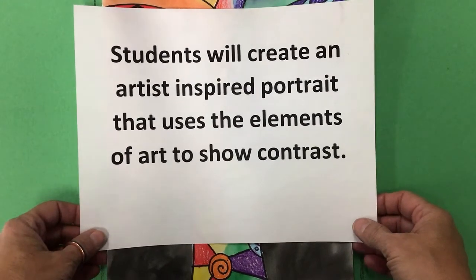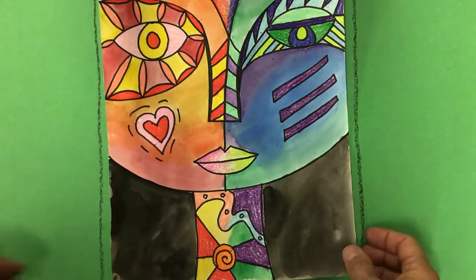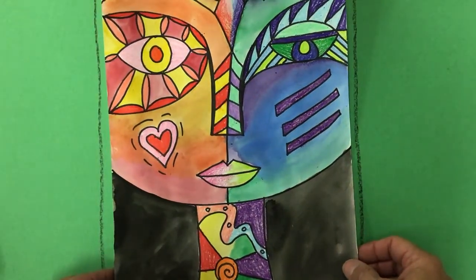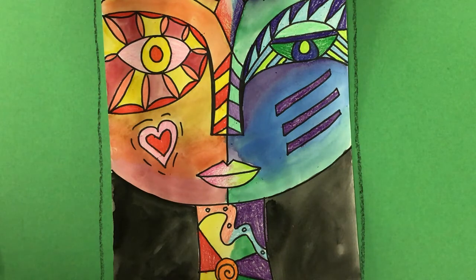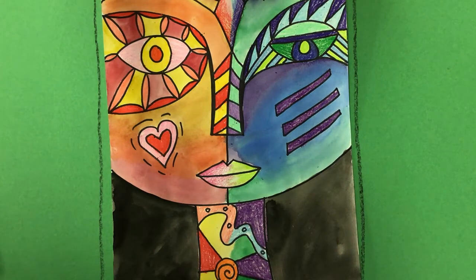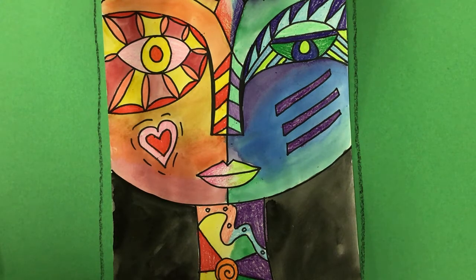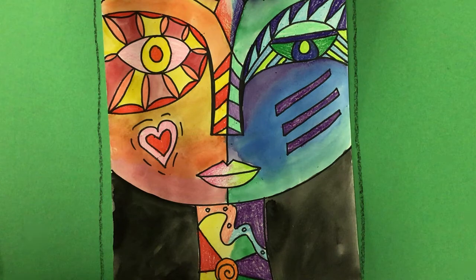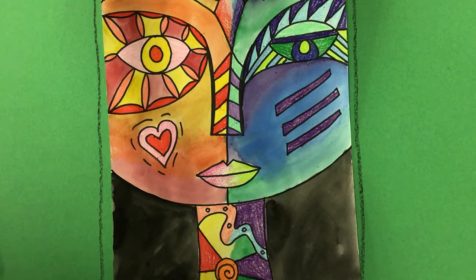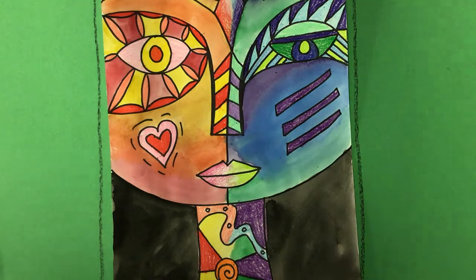So you're going to try and find ways to create differences in your portrait. Here's an example I did with crayon and paint — that's what I'm going to demonstrate today — but you could do the entire thing with crayon, oil pastel, or chalk. Notice that the right and the left side have contrast. They do not match — not only do the lines, shapes, and colors not match, but even the overall style. So be thinking about that when you're creating your portrait.